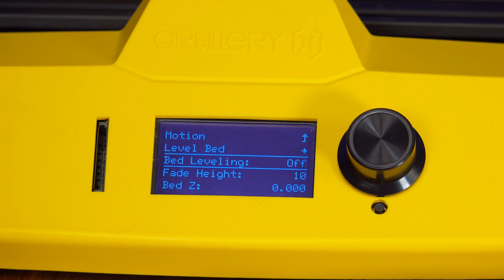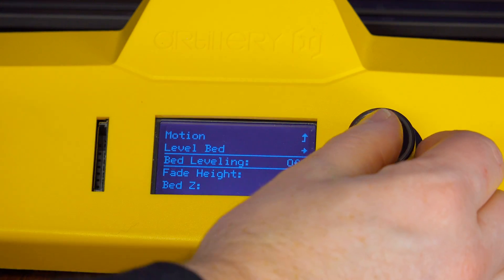There is even a manual probing option enabled, which is not addressed in the manual or on the website. This could come in handy if the build surface happens to be warped. I'm going to skip this for now and start printing.